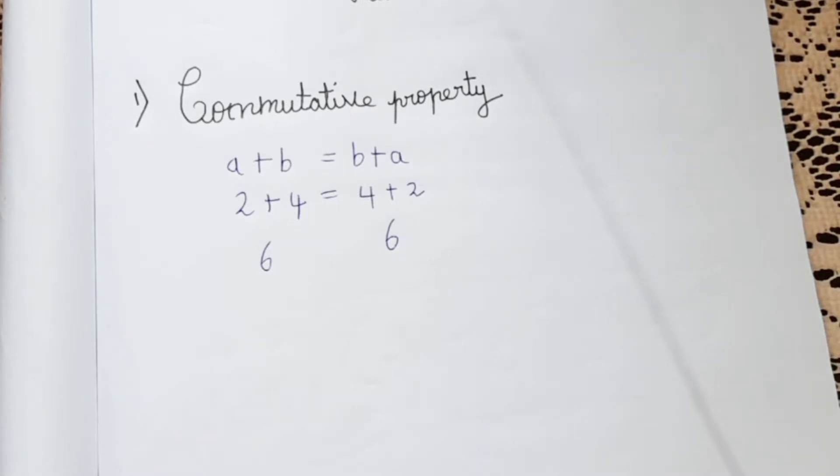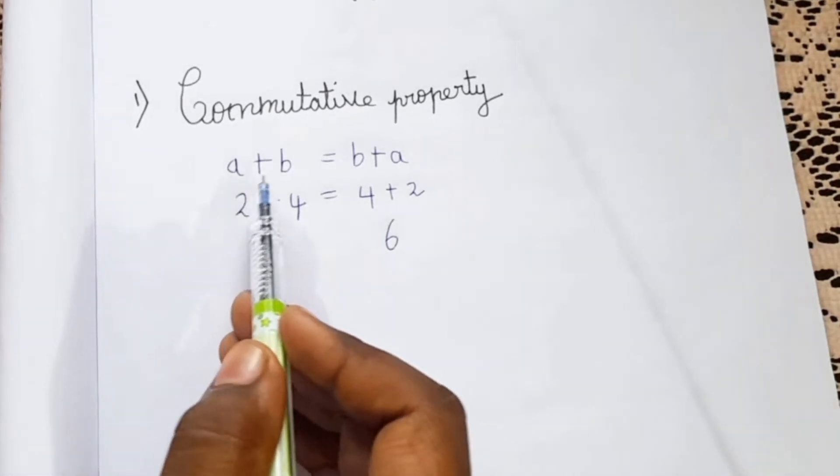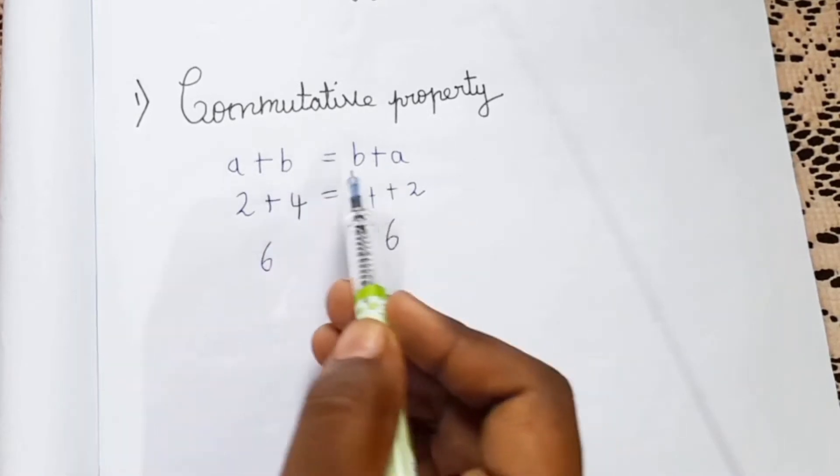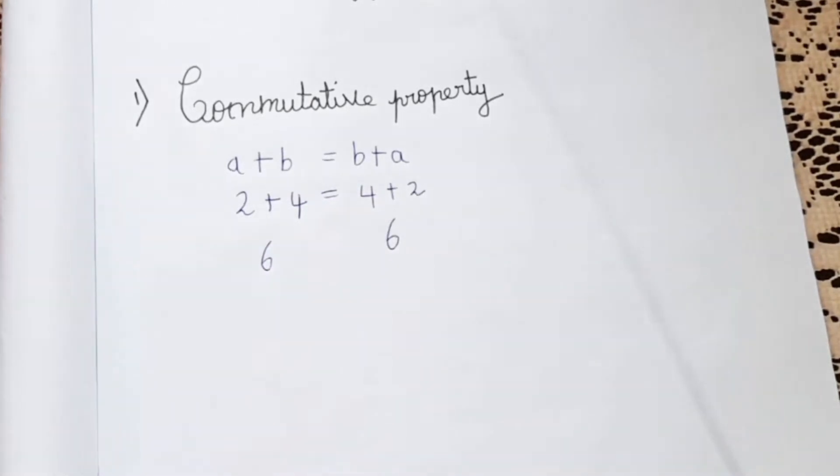So if we change the places the answer is not changing in addition, which means in addition commutative property is there. Once more I am saying you in commutative property if we have a plus b we can write it as b plus a.